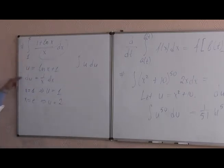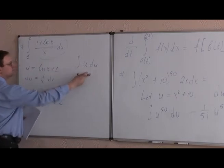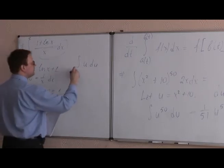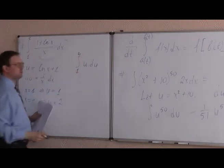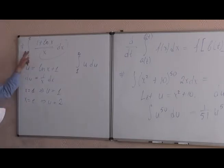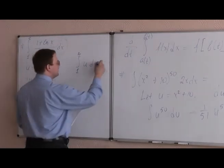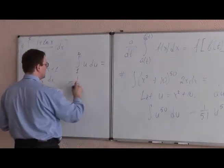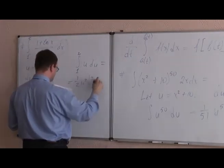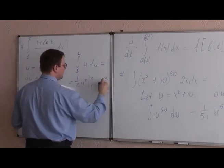So instead of integral from 1 to e, 1 plus log x divided by x, dx, we have integral of u by du with the limits from 1 to 2. This is going to be the same integral, but this one looks a little bit simpler. So this one is equal to 1 half u squared from 1 to 2, which is 3 over 2.